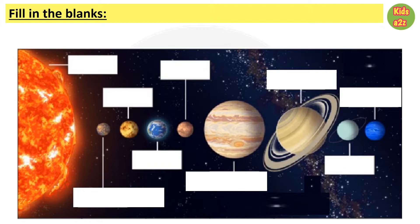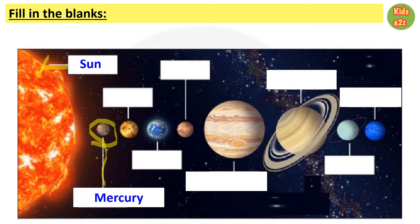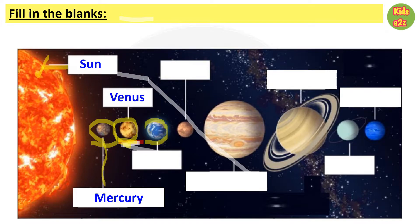Here in this worksheet some pictures of heavenly bodies are given and kids need to identify them. The first picture is of the Sun. The next picture shows the closest planet to the Sun, so it is Mercury. The next one is the brightest planet, and it is Venus.